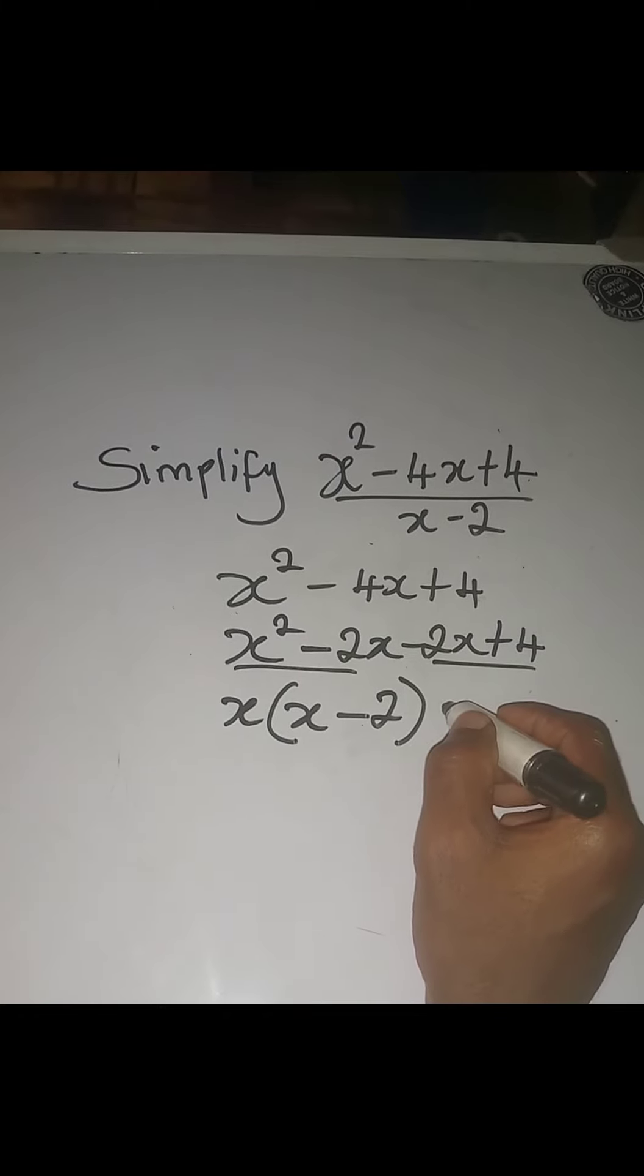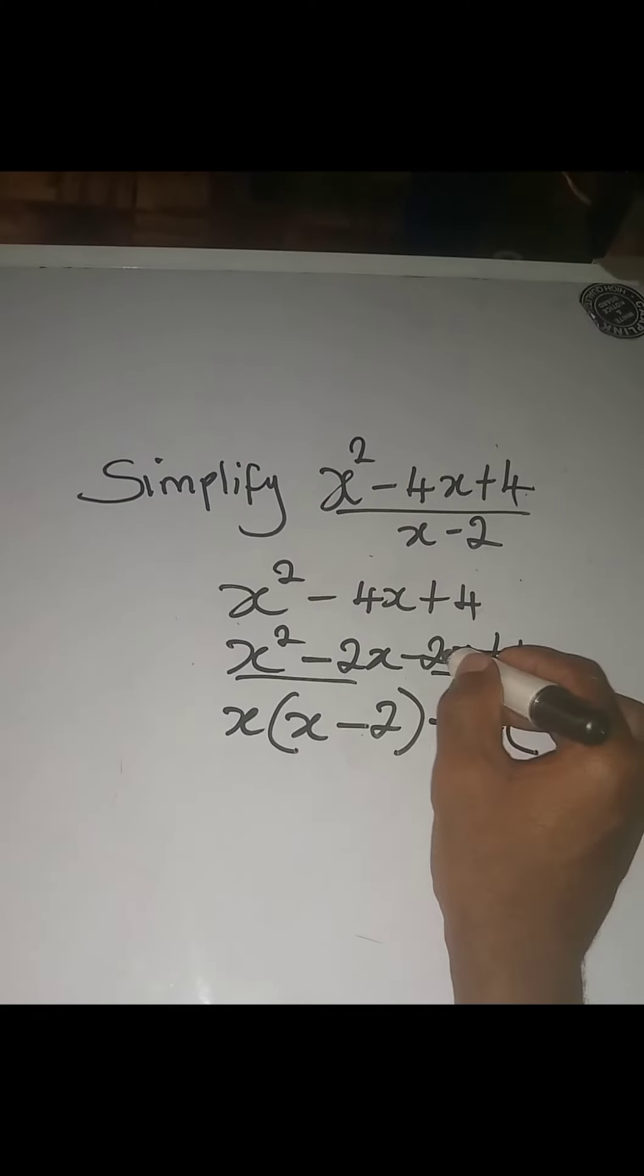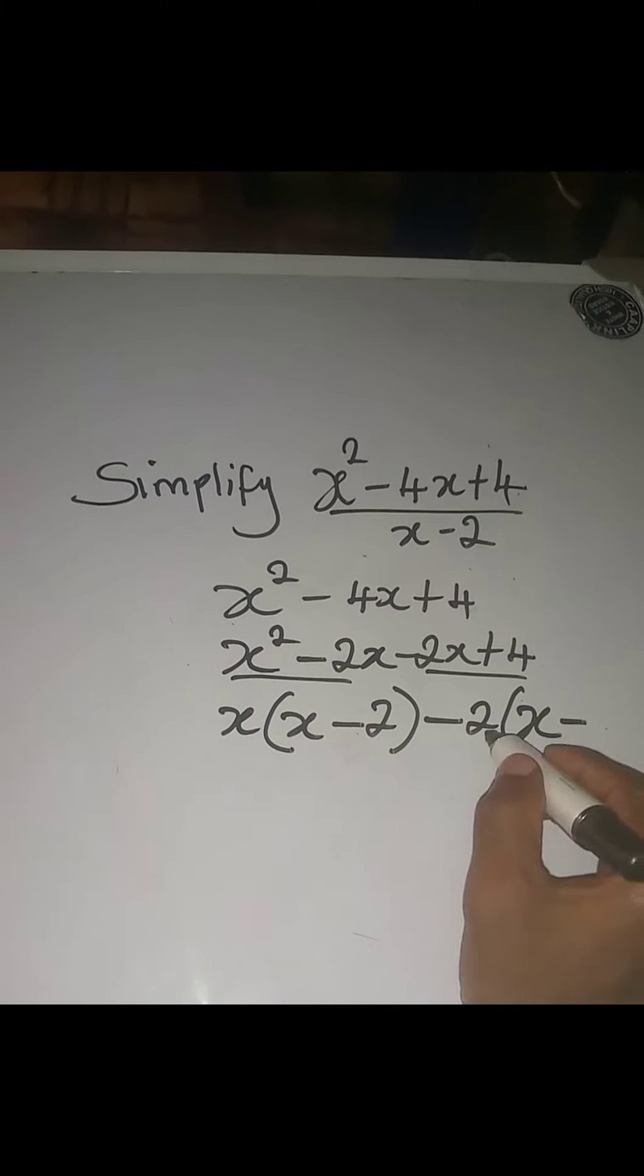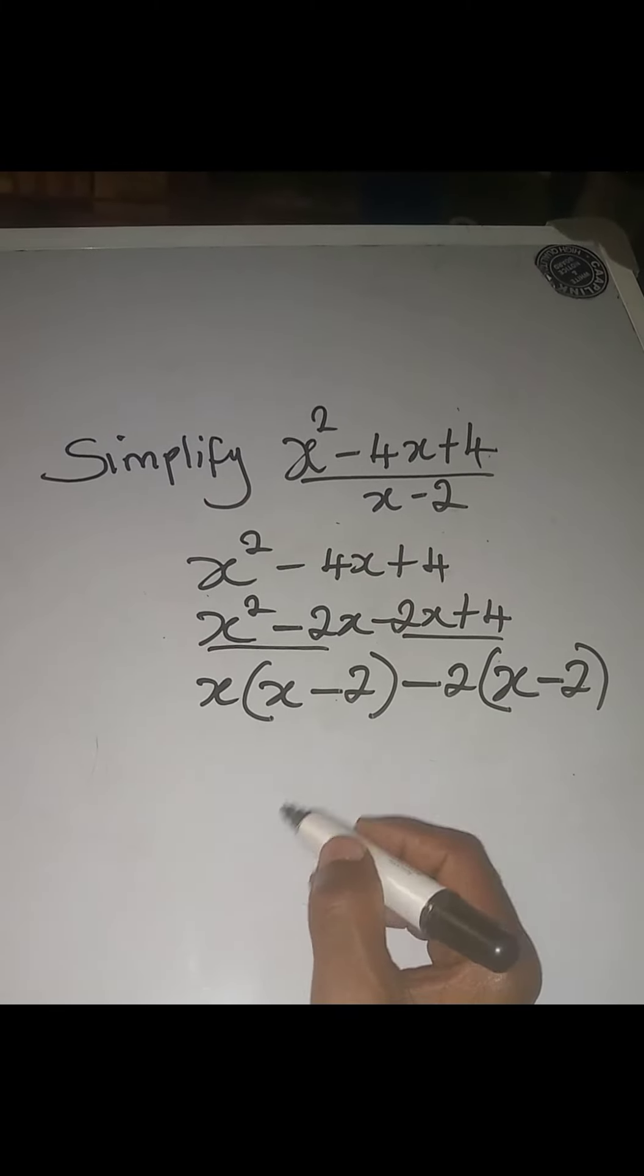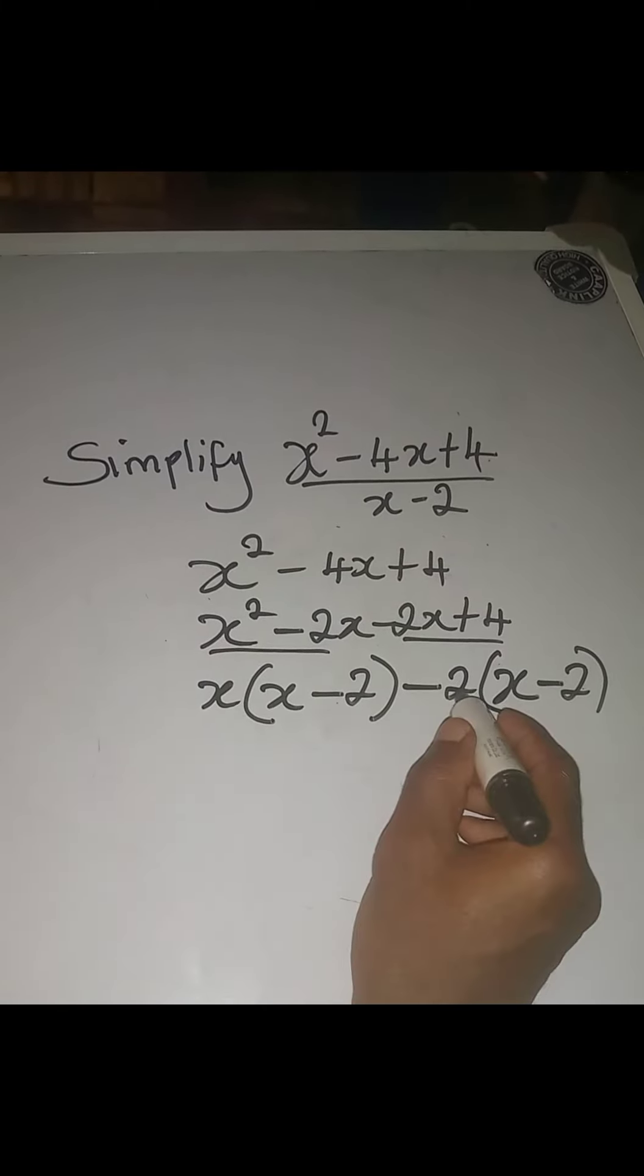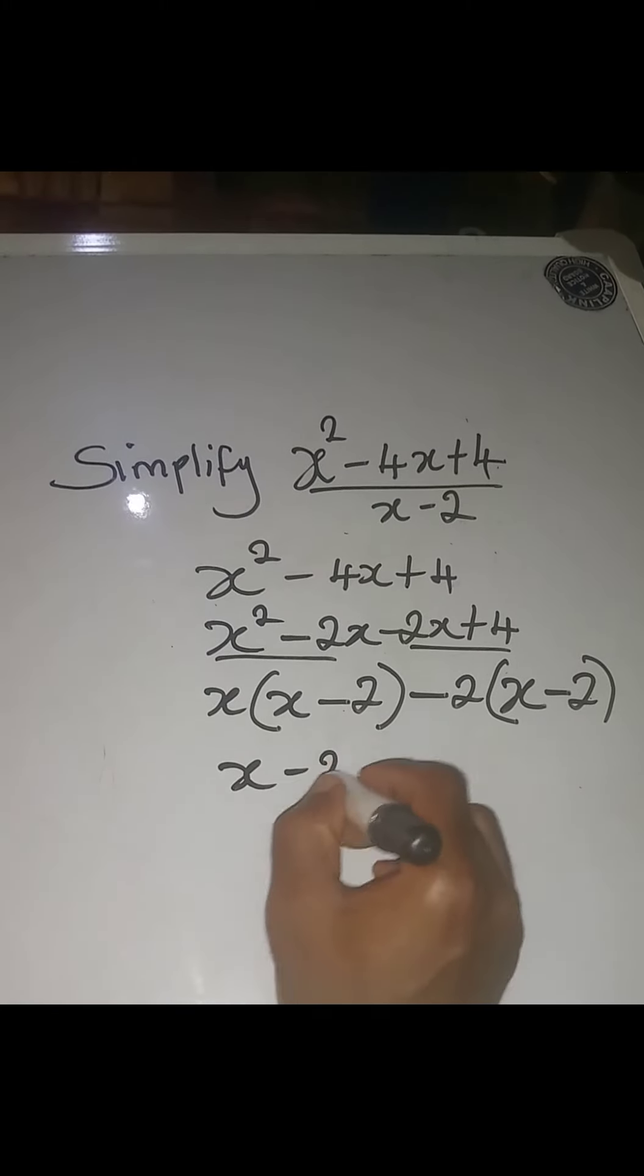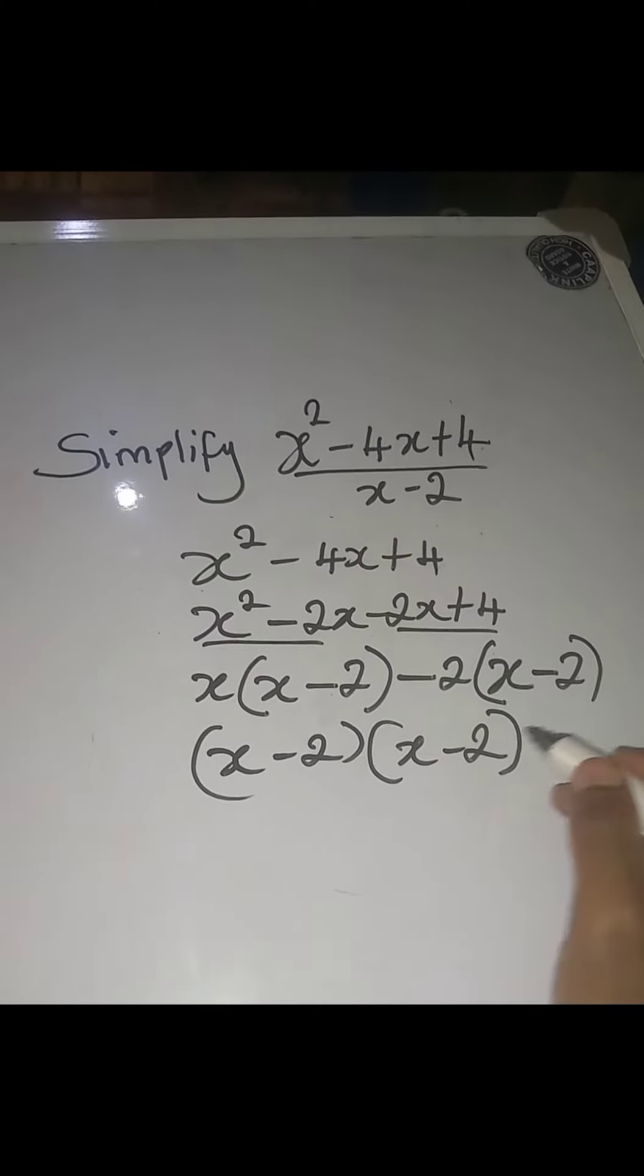For the second group, what is common is -2, giving us -2(x - 2). Now bring the terms outside together, so we have (x - 2)(x - 2). This means we have (x - 2) in two places.